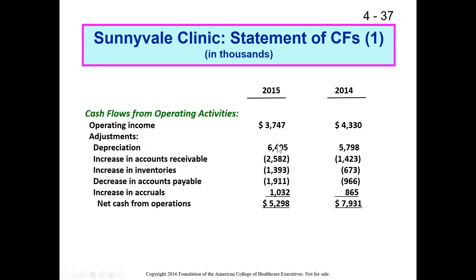We add all these adjustments together — including the negatives — and arrive at an adjusted net cash from operations. Sunnyvale started with operating income of $3.7 million, made all these adjustments — the biggest being depreciation — and arrived at a net cash from operations of $5.2 million. So $5.2 million in cash came into the organization as a result of operations.